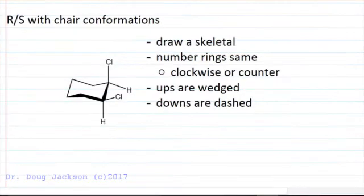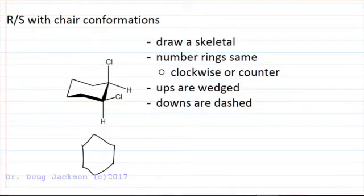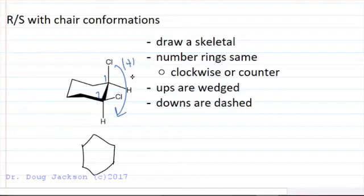to convert this chair conformation back into a skeletal structure. We start with a six-membered ring, and by nomenclature or just to keep track of everything, we can number our ring one, two dichloro. Since we're going clockwise, let's keep that clockwise in...